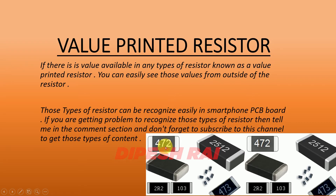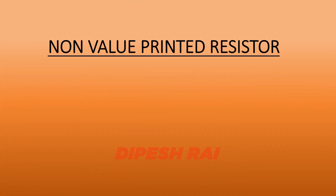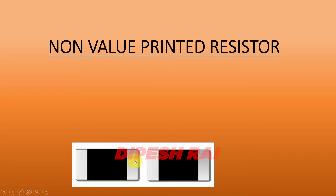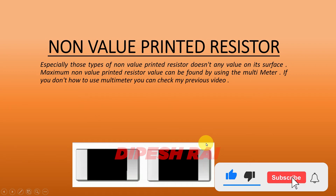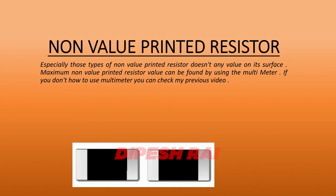If you are getting a problem recognizing those types of resistors, then tell me in the comment section. Now we are learning about the non-value printed resistor. The non-value printed resistor is also one of the important types of resistors. These types of resistors can be found on the mobile phone PCB board. Especially, non-value printed resistors don't have any value on their surface — there is nothing on the surface of the resistor. This type of resistor is known as a non-value printed resistor.